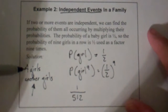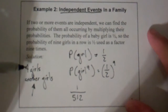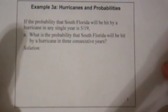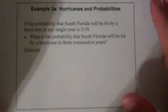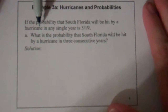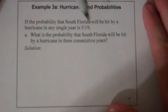This is why you'll get three, four, five of the same sex in a row before you have one that breaks that. Probably age changes the hormones, and so it's the body chemistry thing that changes and allows the opposite sex to creep in. So, what about example number three — hurricanes and probabilities. If the probability that South Florida will be hit by a hurricane in a single year is five out of nineteen, what is the probability that South Florida will be hit by a hurricane in three consecutive years?